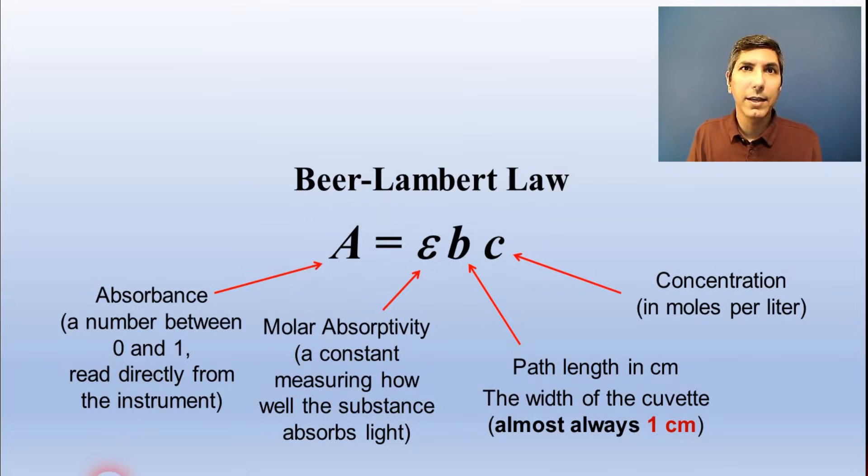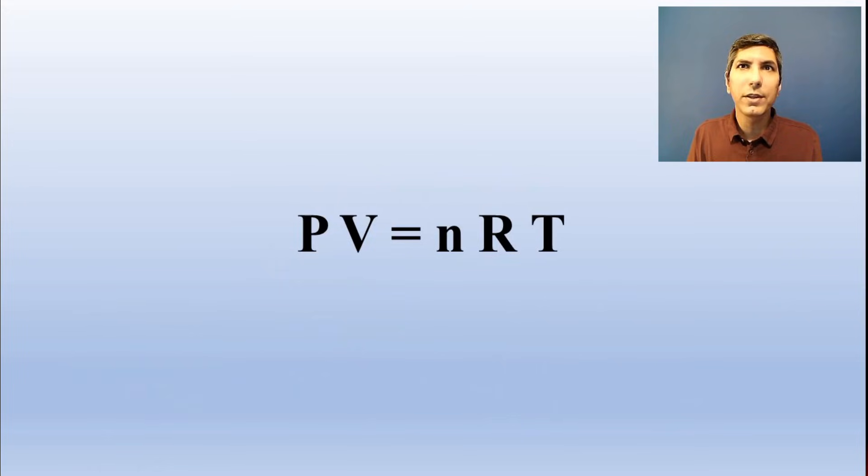If you're doing an experiment with gases and you're using the ideal gas law, PV equals nRT, if you have a faulty thermometer that reads the temperature too high and you're trying to solve for number of moles, n, that means your calculated value for n will be too low. Use the algebra in the equation to figure out the effect of an error.